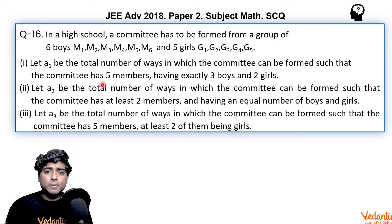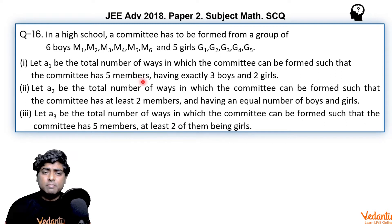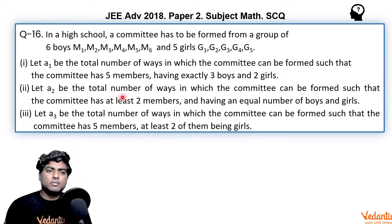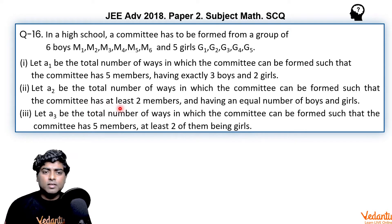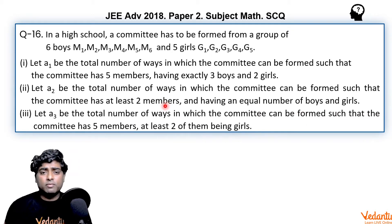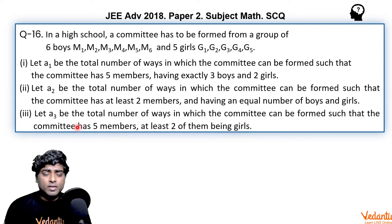Certain questions are asked. In the first case, α1 is the total number of ways the committee can be formed with five members total, having exactly three boys and two girls, giving 6C3 × 5C2. α2 is the number of ways of forming the committee having at least two members with equal number of boys and girls — so one boy one girl, two boys two girls, three boys three girls, four boys four girls, five boys five girls — five cases.